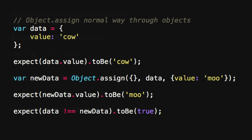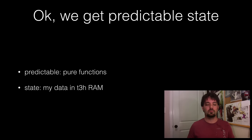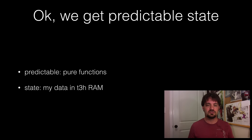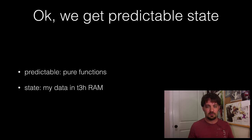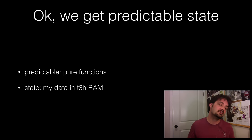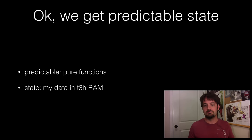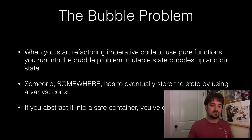That object we set in the first parameter is kind of the start. So when we say predictable, we mean pure functions — you can call the same function with the same inputs and always get the same output, regardless of where it's called. Very, very predictable code. State is where your data is in the RAM. It's what you're saving. It could be the URL, it could be the user that's logged in, those kinds of things.